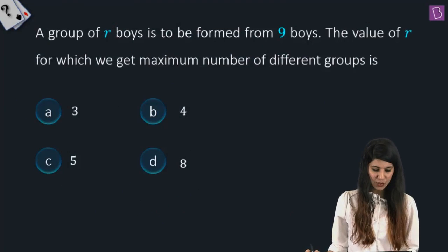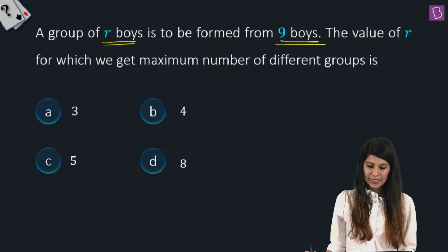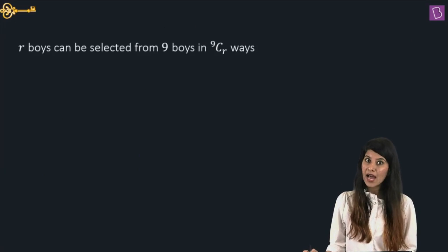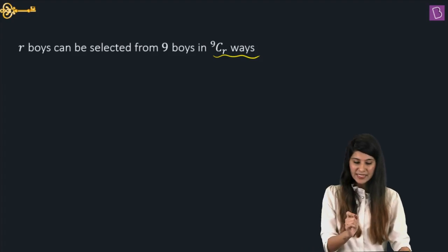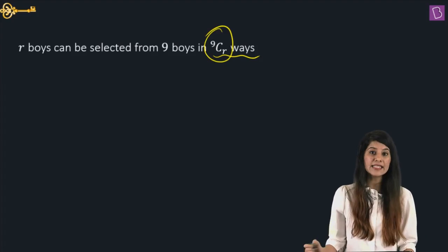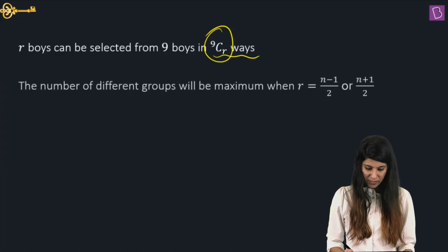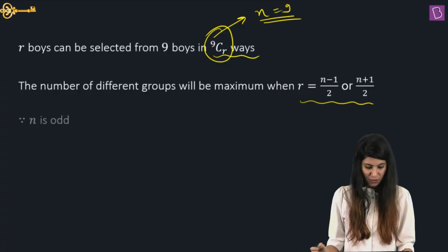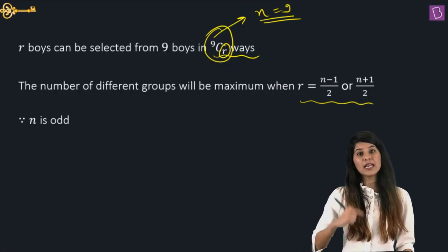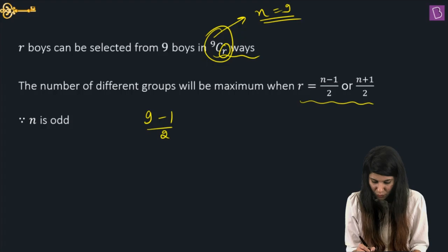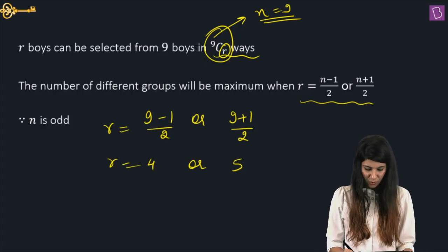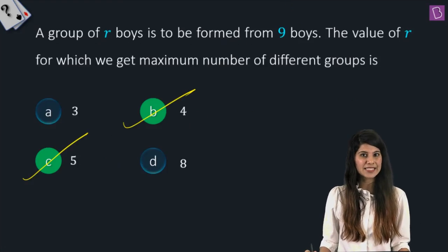In this question, a group of R boys is to be formed from nine boys. We need to find the value of R for which we get the maximum number of different groups. R boys can be selected from nine boys in 9CR ways. 9CR is maximum when R = (N−1)/2 or (N+1)/2, since N = 9 is odd. So R = 4 or R = 5 — options B and C are correct.